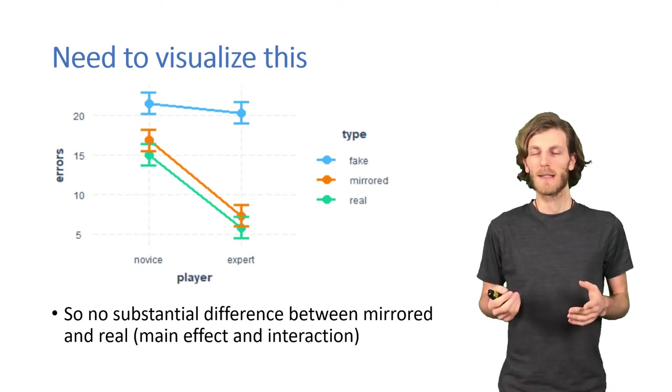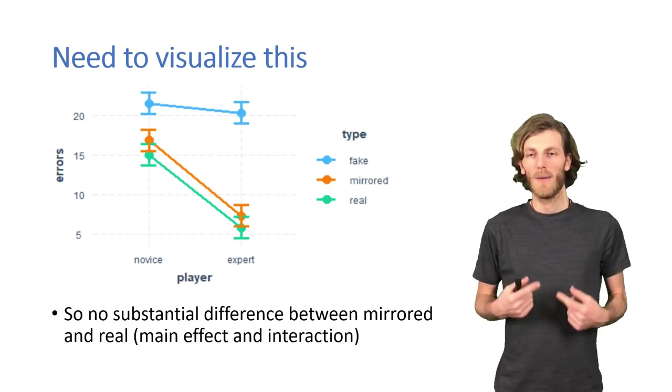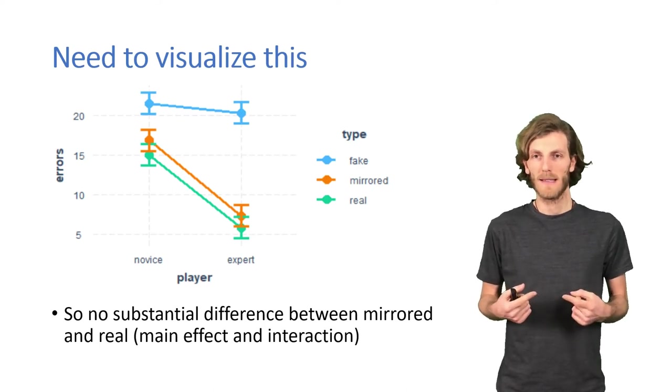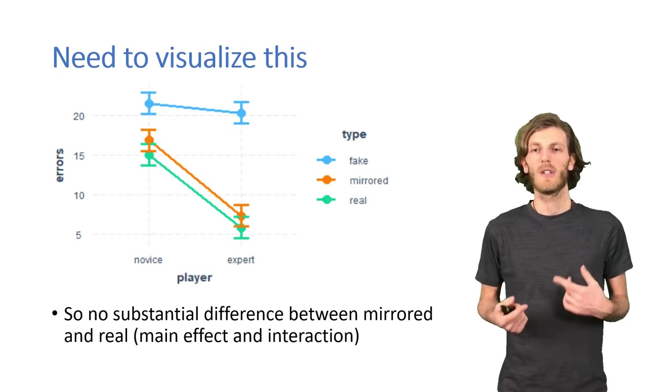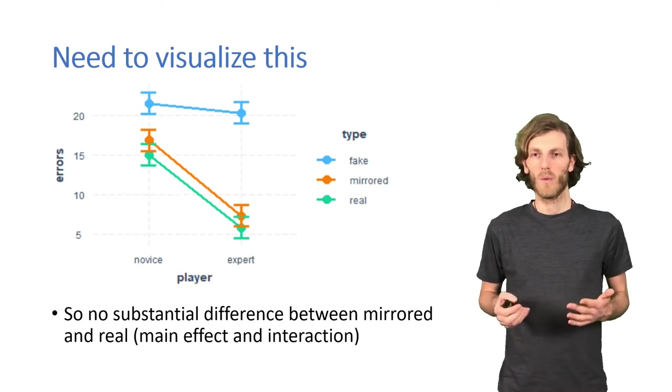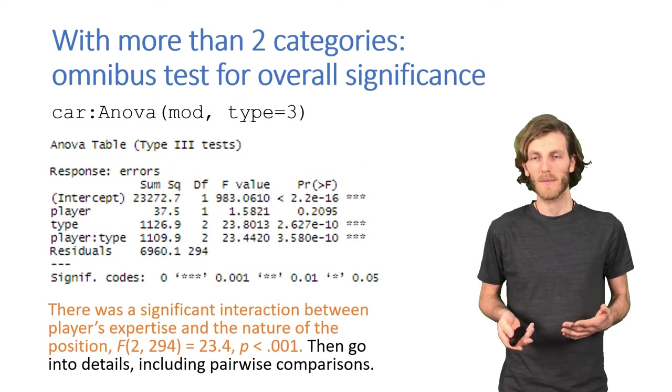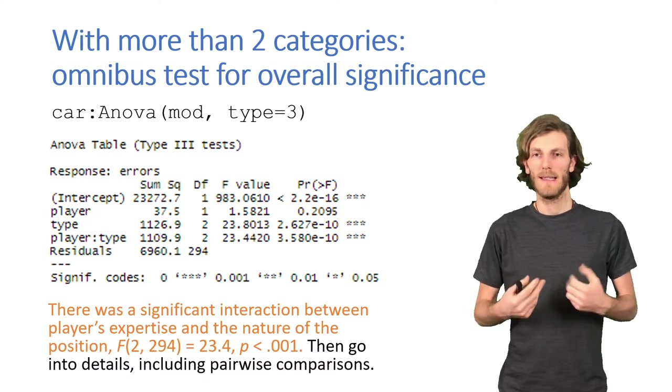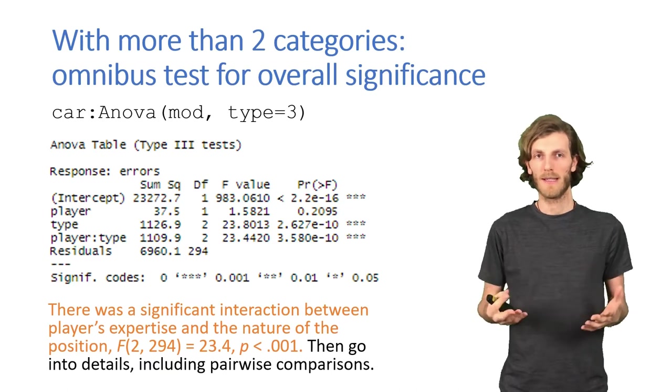If we just have three conditions, we might actually go about it this way. However, we need to be aware of multiple comparisons. So, if we have too many lines, it will no longer work to just plot all the lines and see whether any of them are not parallel. Then, we do need to return to an omnibus test. An omnibus test is again testing whether the addition of a specific term to the model significantly improves the model.